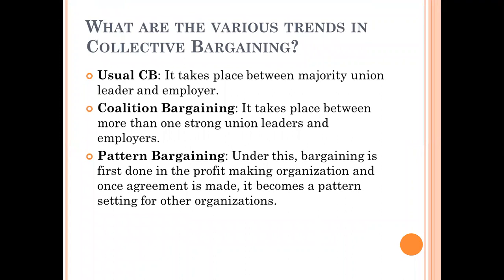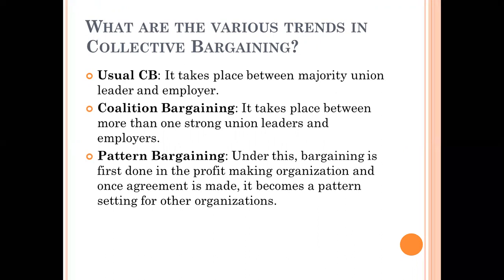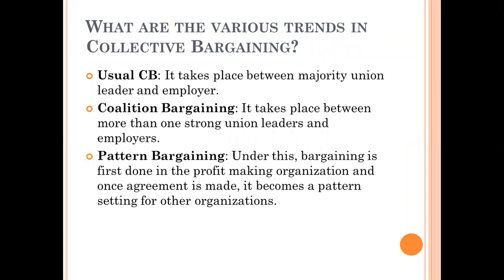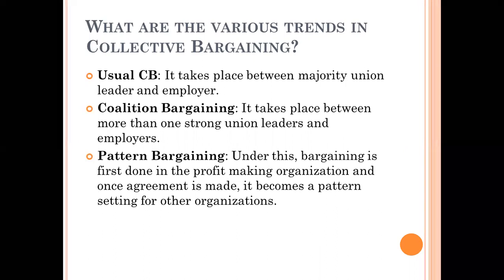What are the various trends in collective bargaining? There are different types of collective bargaining. One is usual collective bargaining, which takes place between the majority union leader and the employer — two parties. There will be only one strong trade union, the majority union, on one side and the employer on the other. If discussion or collective bargaining takes place between these two parties, then it is called usual collective bargaining.